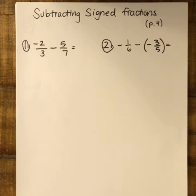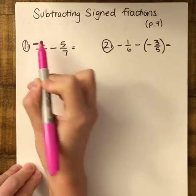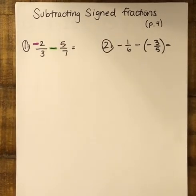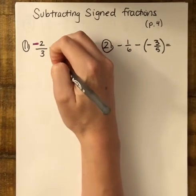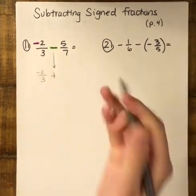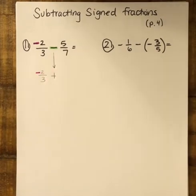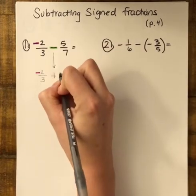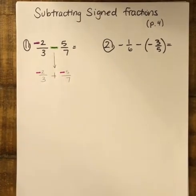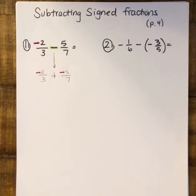First, I'm going to look through my problem and see if I notice any negative or subtraction signs. My first problem has a negative sign with the two in the fraction, and then it says subtract five-sevenths. I'm going to change this subtraction to adding the opposite number, because that is how you create your equivalent addition problem. So the first number stays exactly the same — negative two over three — and instead of subtracting five-sevenths, we add negative five-sevenths, bumping that negative sign up to the top of the fraction.